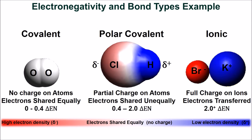This figure shows electrostatic diagrams of oxygen, hydrogen chloride, and potassium bromide. An electrostatic diagram is a three-dimensional picture of a molecule that demonstrates the charge distribution. Red indicates an area of high electron density, blue indicates an area of low electron density, and white indicates no charge. The covalently bonded oxygen has no charge separation, hydrogen chloride has a partial charge separation, and potassium chloride has a full charge on each ion.